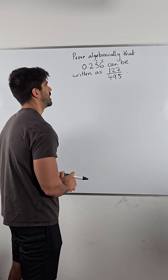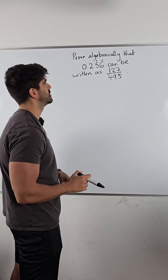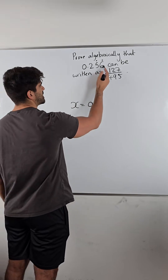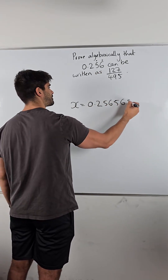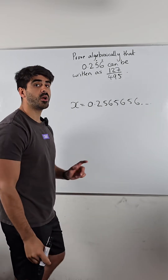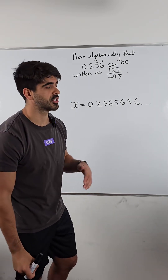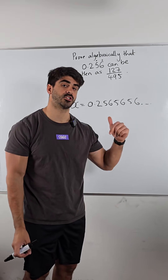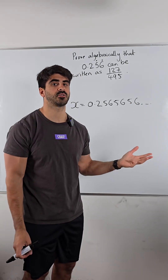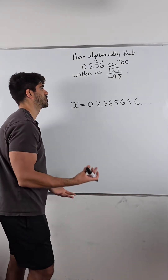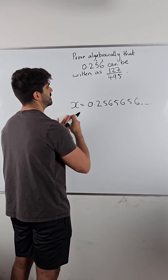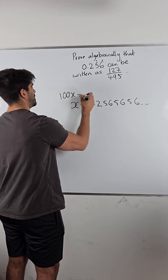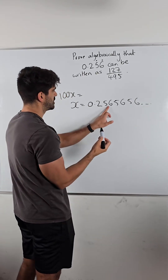So how do we prove algebraically that this recurring decimal can be written as this fraction? All you do is look at the number of digits that are recurring. We first label it as x — 0.256565... — the five and the six are recurring. If one number is recurring, multiply by 10; two numbers recurring, multiply by 10 squared (which is 100); three numbers recurring, multiply by 10 cubed. Because two numbers are recurring, I'm going to multiply by 100. Multiplying by 100 moves the decimal place twice, so it'll be 25.